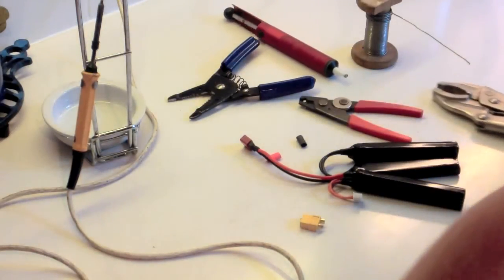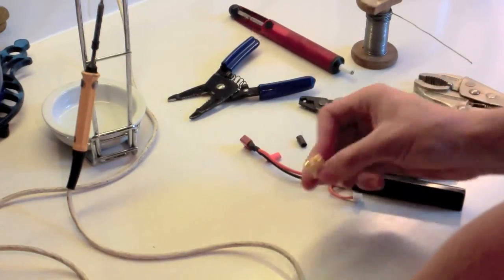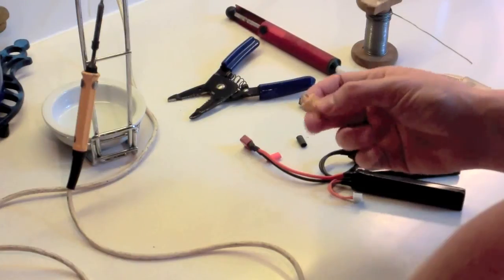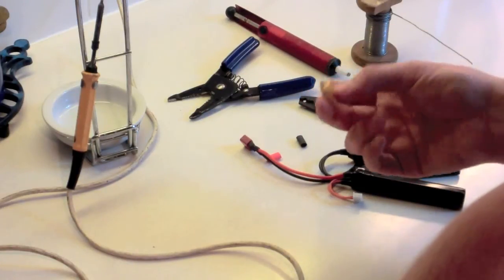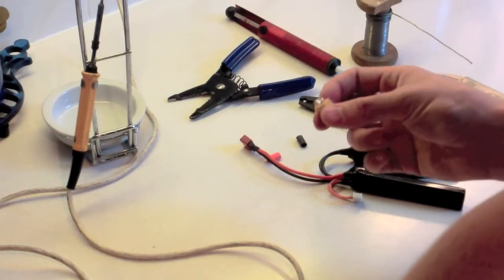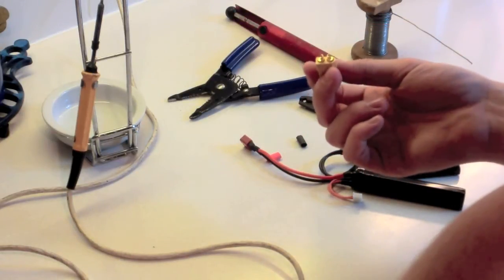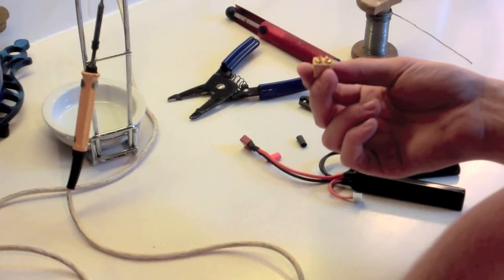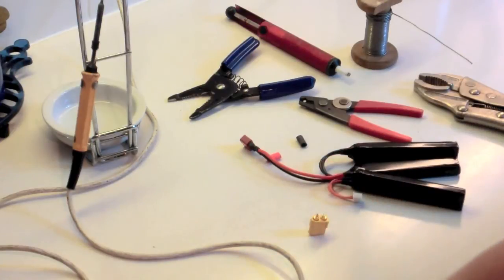And also something to clamp the XT60 or whatever connector you go for in whilst you're soldering. This is mainly because it makes it a lot easier to kind of put the solder into the connector and also to put the wire into the connector and solder it all up. Because if you try and do it while this is loose it's nigh on impossible.